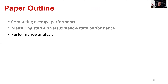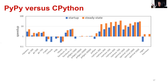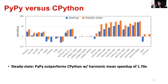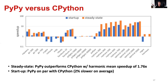Now that we've described the statistically rigorous benchmark methodology, we can use it to analyze Python workloads. We compare PyPy versus CPython, where a speedup value greater than one means PyPy leads to faster execution. For steady state performance, PyPy outperforms CPython with a harmonic mean speedup of 1.76x. For startup performance, PyPy is on par with CPython — in fact, 2% slower on average. This means the PyPy.org website primarily reports startup performance, which is unfortunate because PyPy is a JIT compiler.